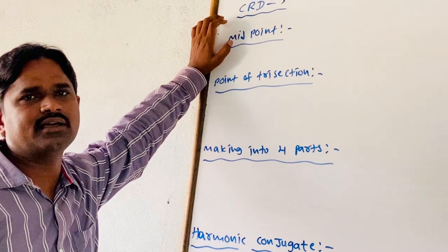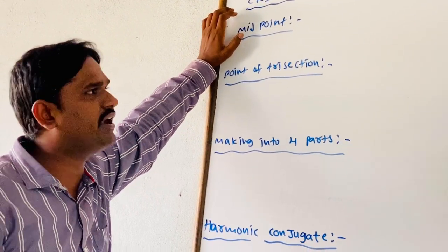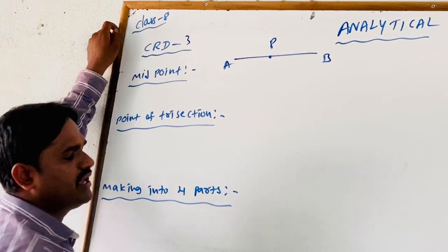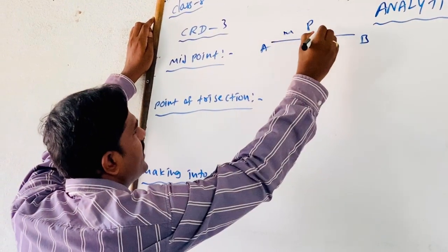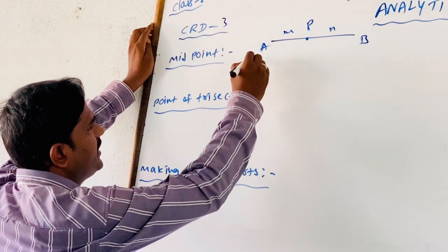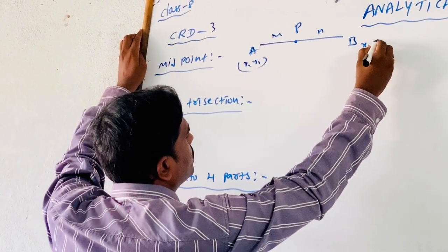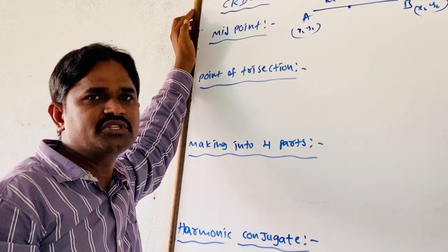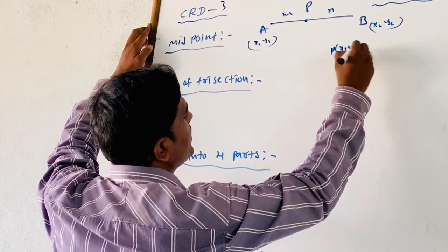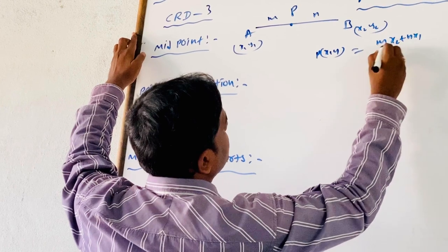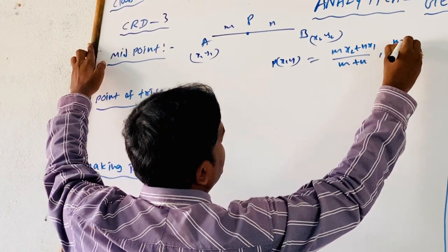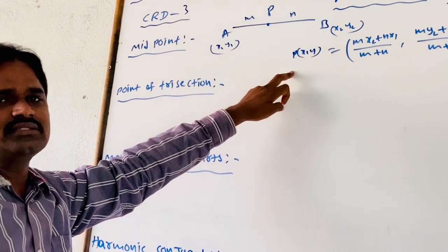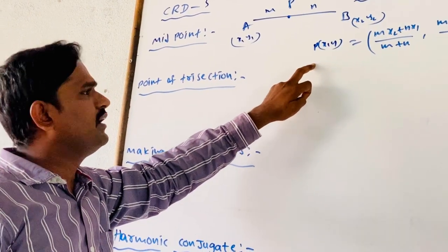What is a midpoint? By using the section formula, which is internally dividing — for example, AB is a line segment where P is interior to AB, then P divides in the ratio M to N, where A is (X1, Y1) and B is (X2, Y2). Then the point dividing AB in the ratio M to N is P(X, Y) = (MX2 + NX1)/(M + N), (MY2 + NY1)/(M + N), which is known as internally dividing the AB line segment.